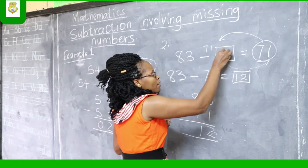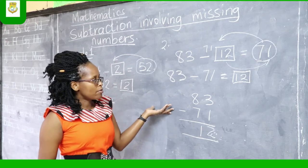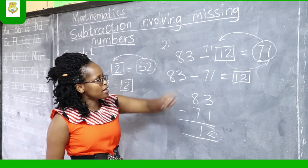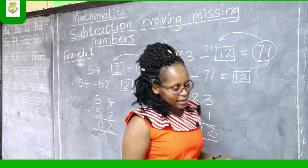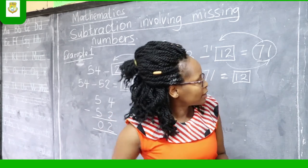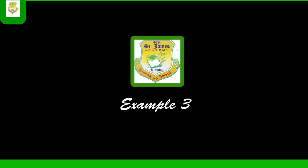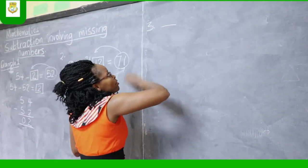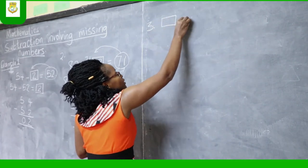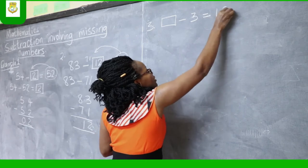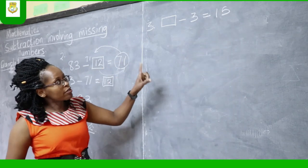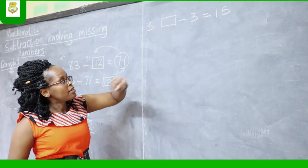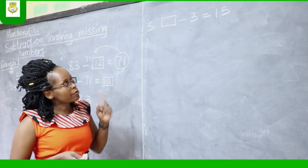So in our first question we have 12 as the answer. That is how we work out missing numbers involving subtraction when the box appears in the middle. Now let's take a case where the box comes first. Example 3: when the box starts — box take away 3 equals 15. When the box is appearing at the front, it requires a different approach. What is the approach we are going to follow here? I want you to be very keen and listen so you can get the concept clearly.